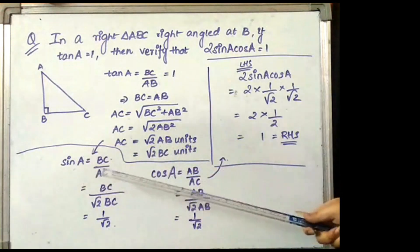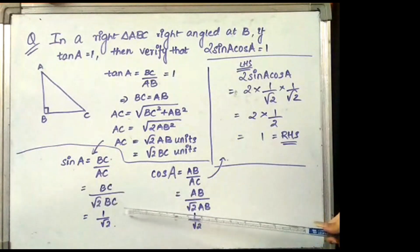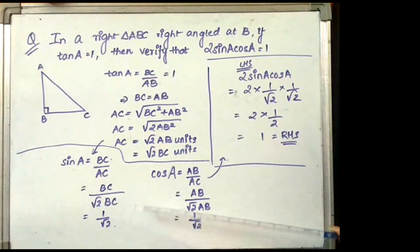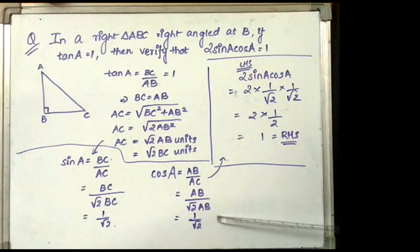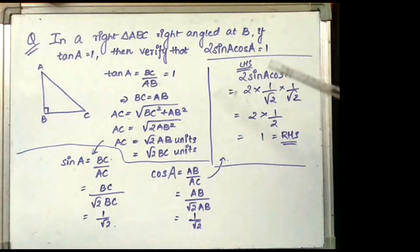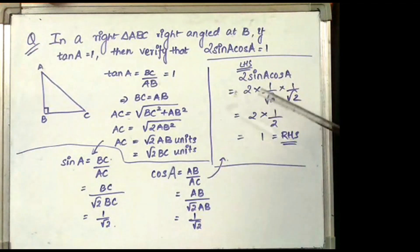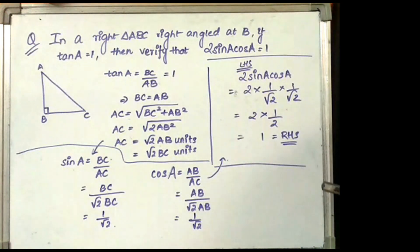Now sin A is BC by AC, which is BC by √2 · BC, which becomes 1 by √2. Cos A is AB by AC, which is AB by √2 · AB, which also becomes 1 by √2. Taking the LHS, 2 sin A cos A = 2 × (1/√2) × (1/√2) = 2 × (1/2) = 1, which is equal to the RHS.